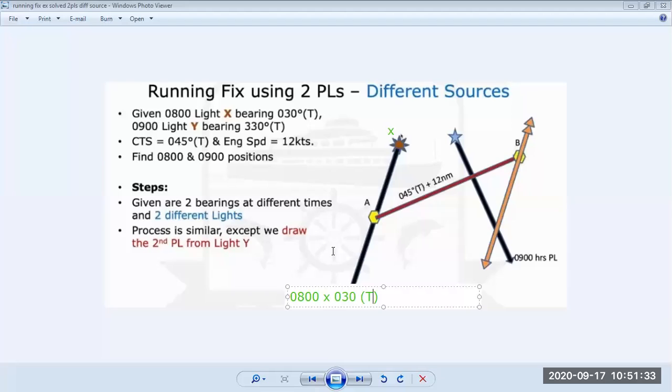Then we have Lighthouse Y which is bearing 330° at 0900. We have the course to steer 045° at 12 knots and we have to find the 0800 and 0900 hours position.